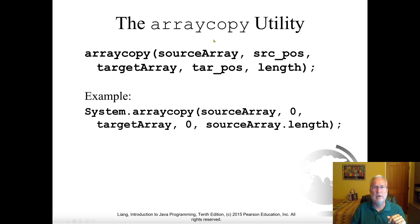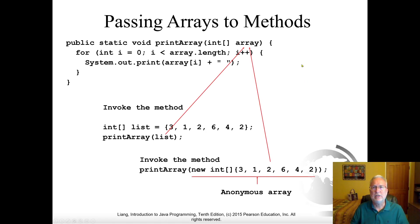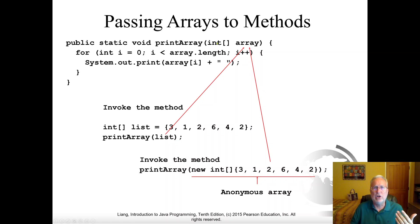There's also a utility called arraycopy — a library function — that copies from one array to another. For passing arrays to methods: down here we call printArray with the list name. You just pass the name of the array, which passes all its elements into printArray. In the method signature, you have to declare it as an int single-dimensional array with a name. When calling, you just say the list name, just like passing an integer.